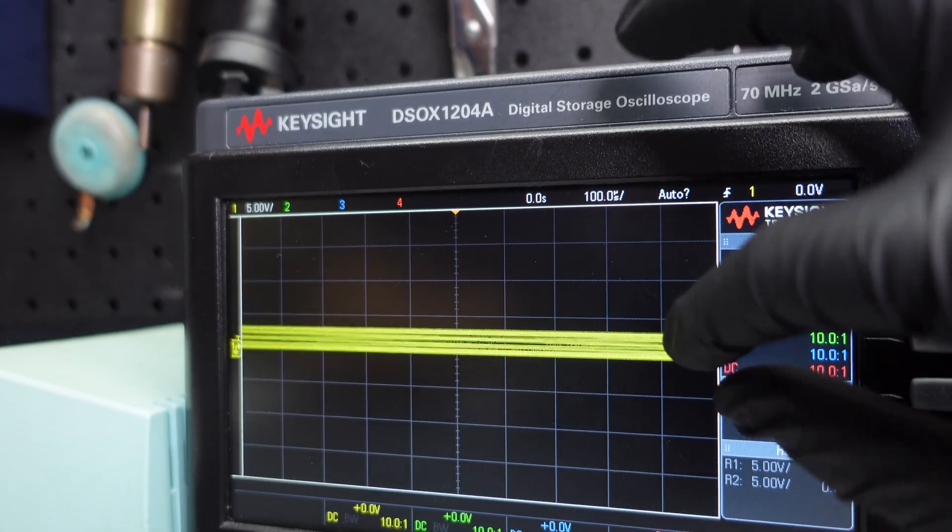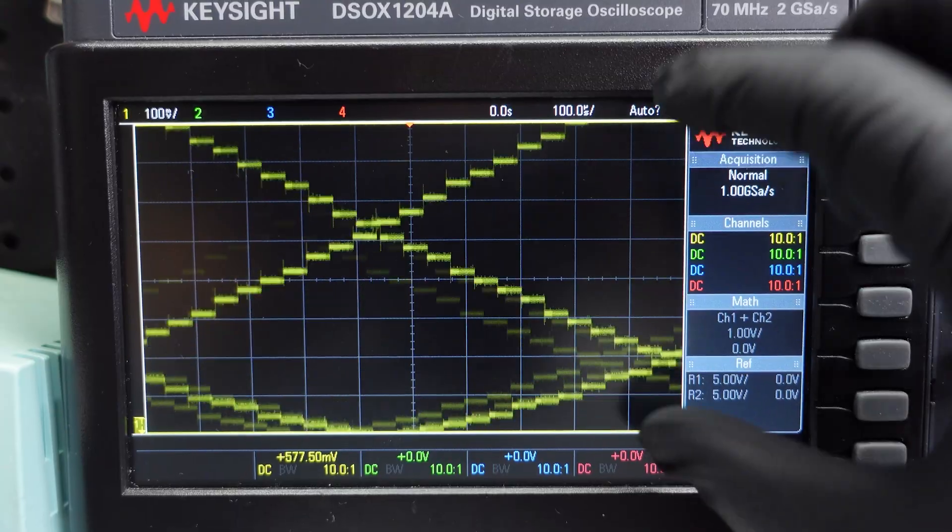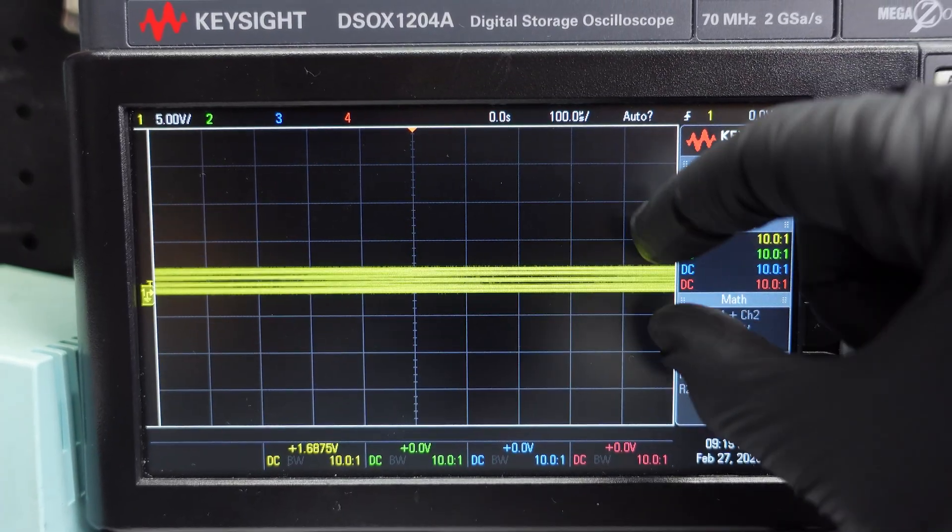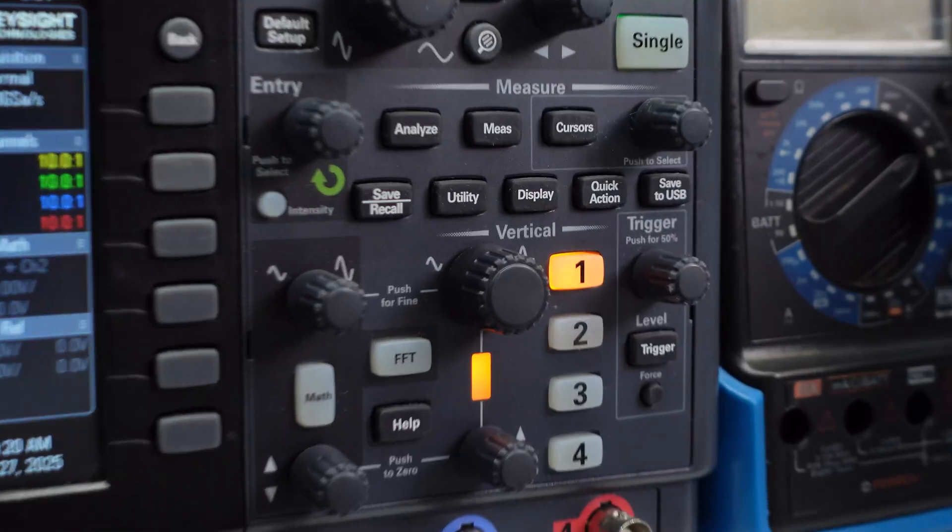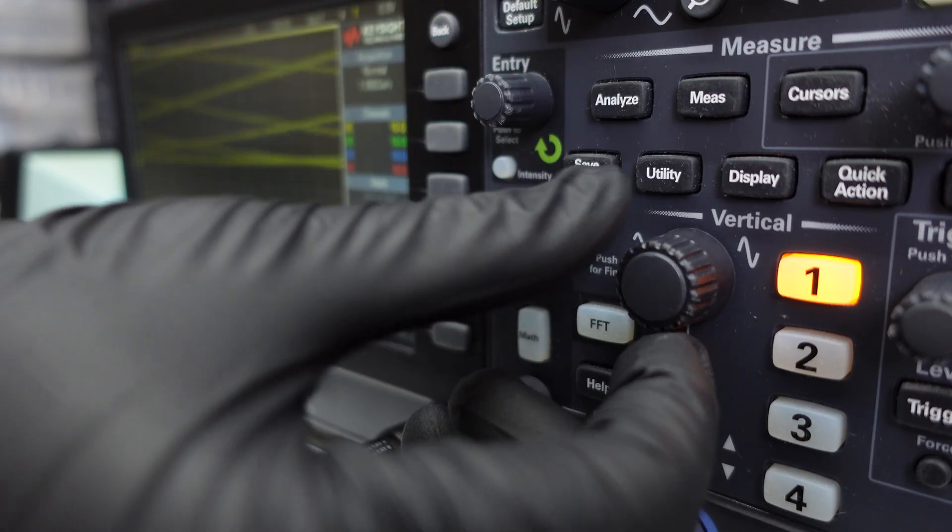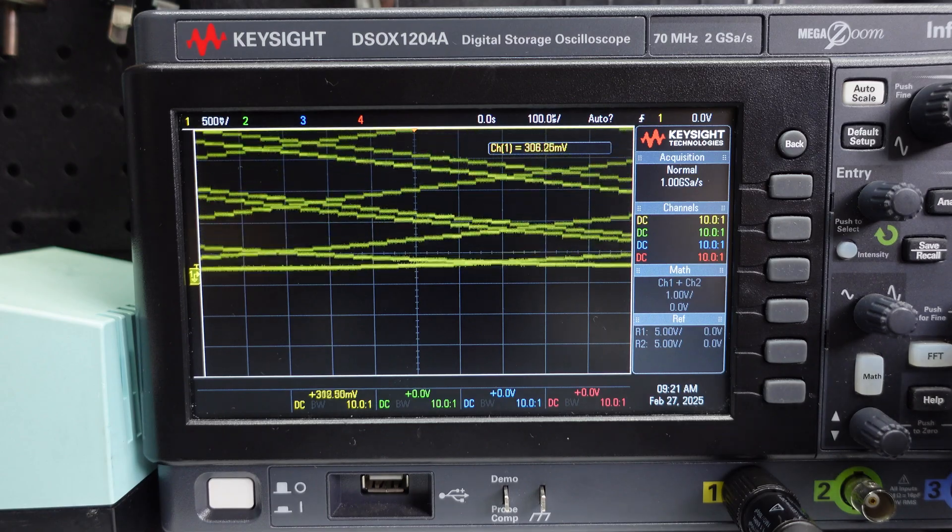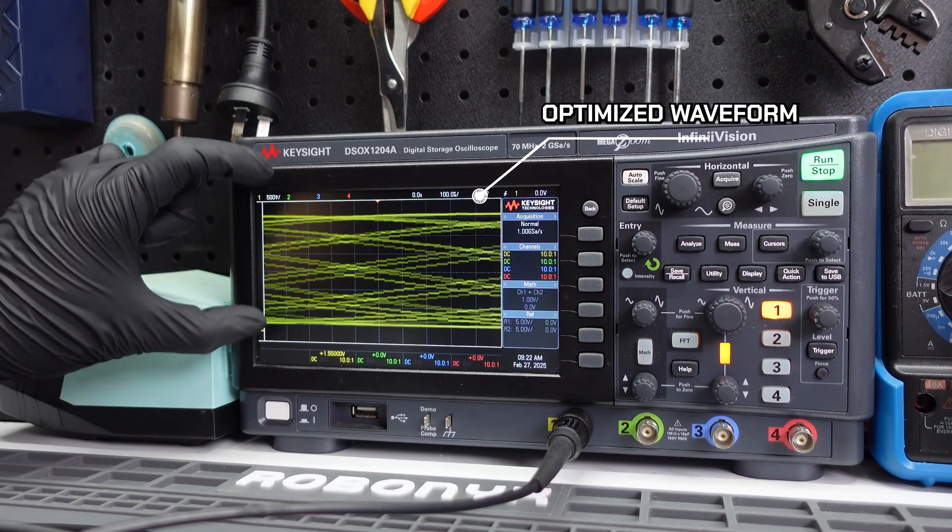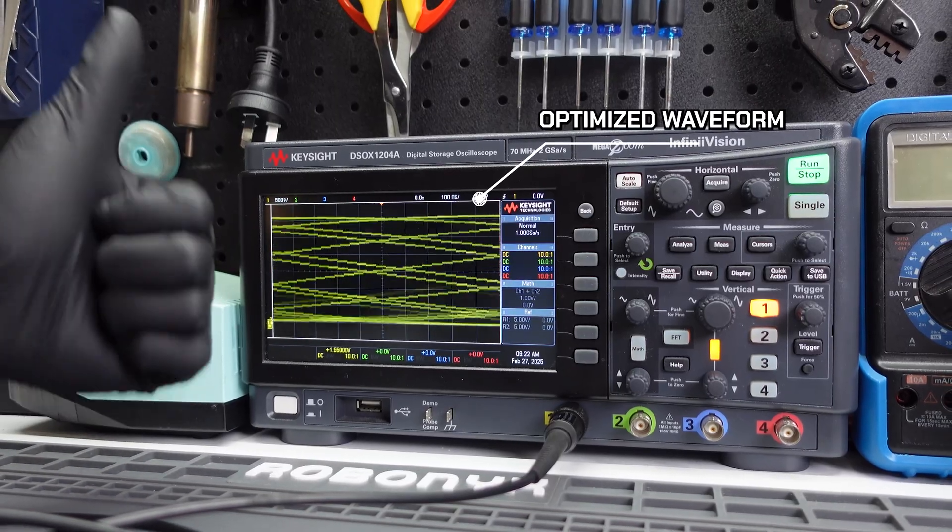First, adjust the vertical scale and position. If the sine wave looks too big and clips off the screen, or if it looks too small and you can't really see what's happening, adjust the vertical scale by turning the big knob labeled vertical. And adjust the vertical position by turning the little knob labeled vertical. You should have the waveform taking up as much space as it can.